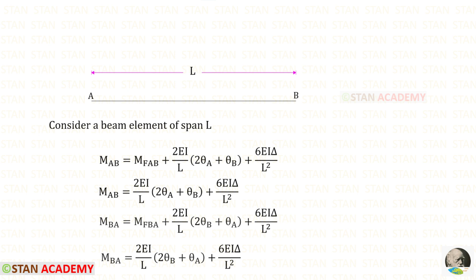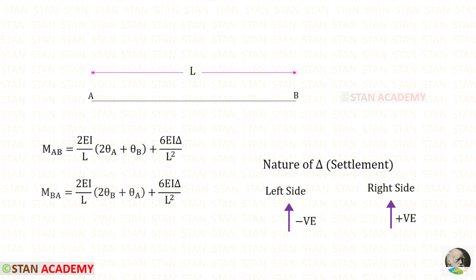You can easily memorize both of the equations — there is only one change. Here you can see that it is 2·theta_A plus theta_B, and here it is 2·theta_B plus theta_A. That is the only change; the rest of them are the same. In the equations, delta is the settlement. Delta can be negative or positive. In the beam we are going to give the settlement in the upward direction — the reason we will know after some time.